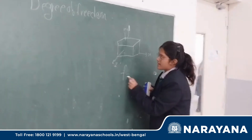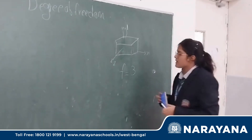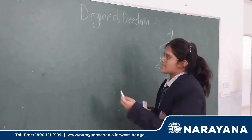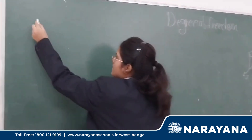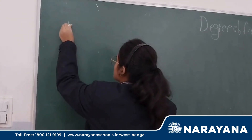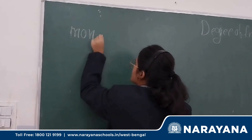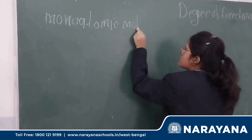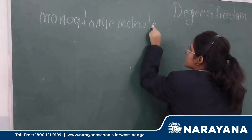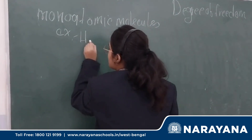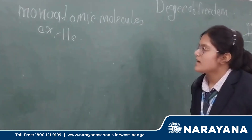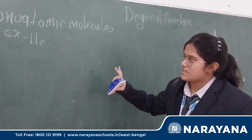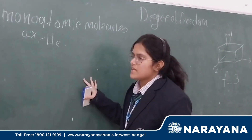So we can say that F, which is the degree of freedom, is three. Now if I am talking about monoatomic molecules of gas — for example, helium — helium is a single gas atom and it can move freely about its own axis. The degree of freedom for helium is going to be three.